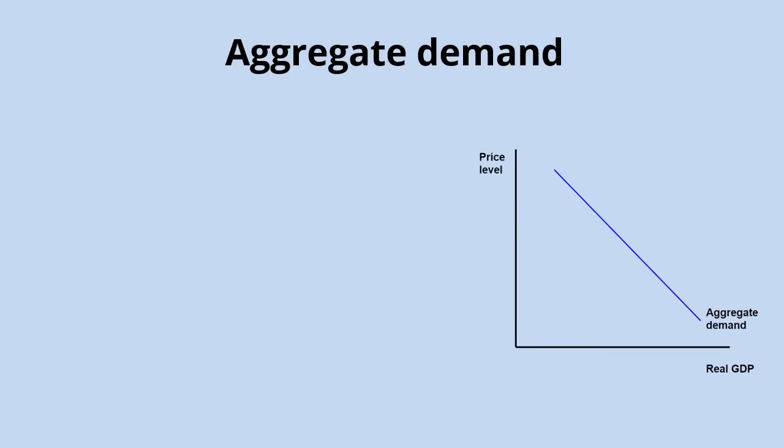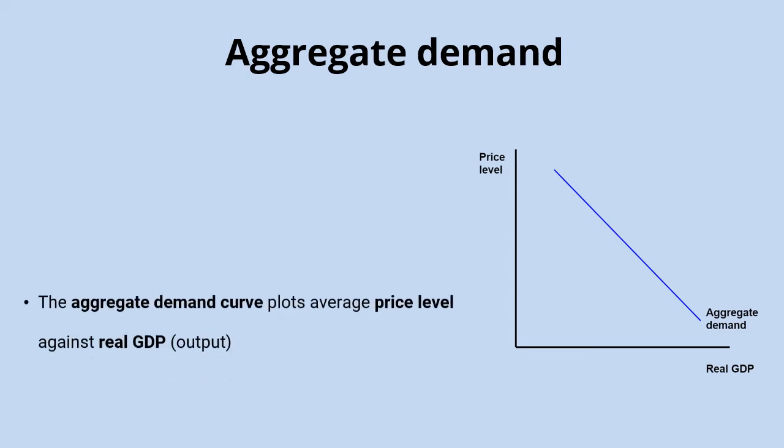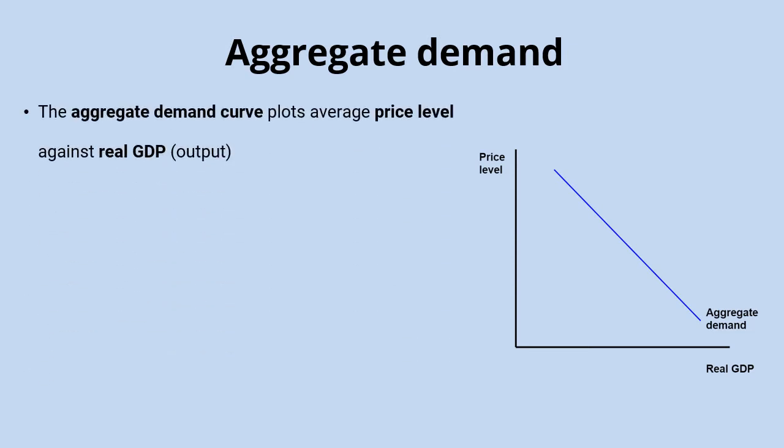In microeconomics, we plot the demand curve with price and quantity on the axis, and it's downward sloping because of the law of demand — as price increases, quantity demanded will decrease and vice versa. In macroeconomics, we're interested in aggregate demand. So there are some similarities here, but a lot of very important differences. Aggregate demand is not the demand for a product in an individual market, but the total demand across an entire economy.